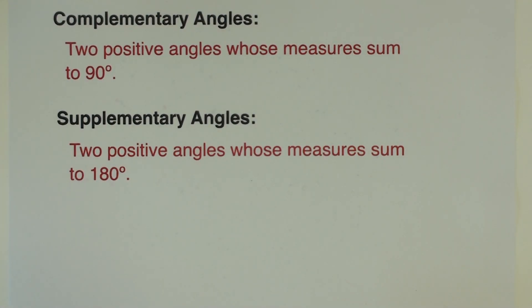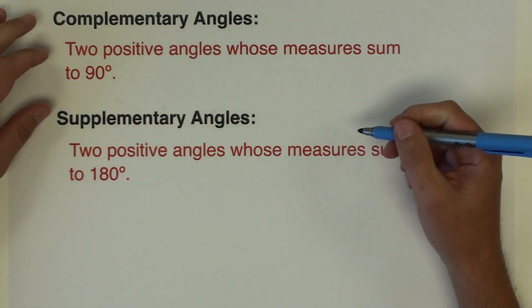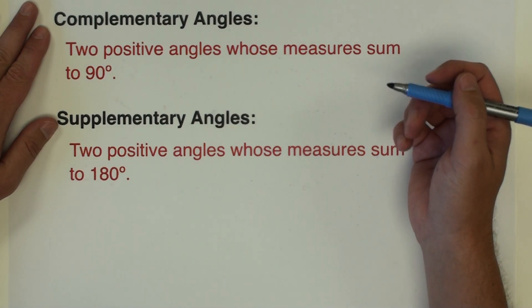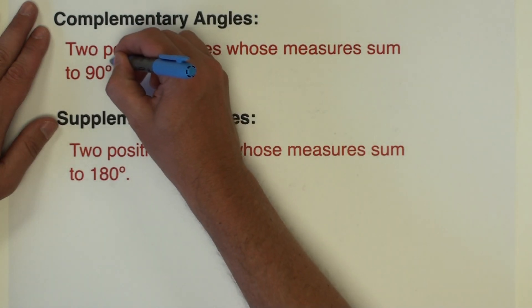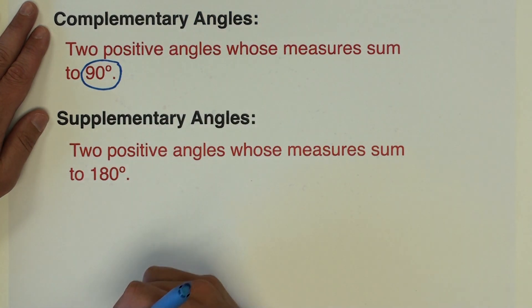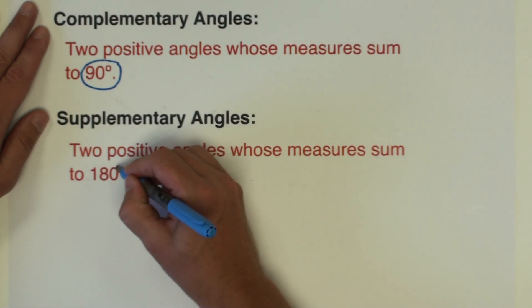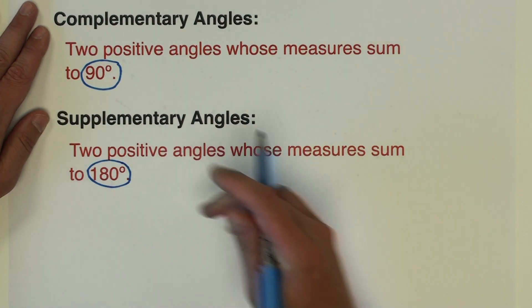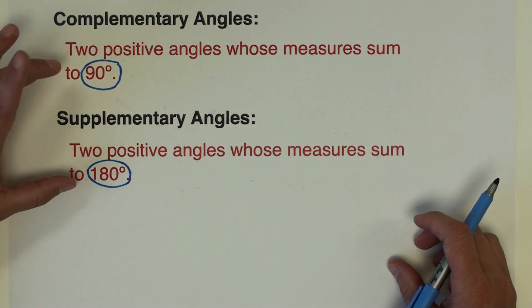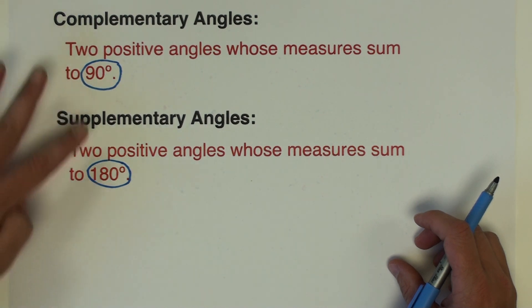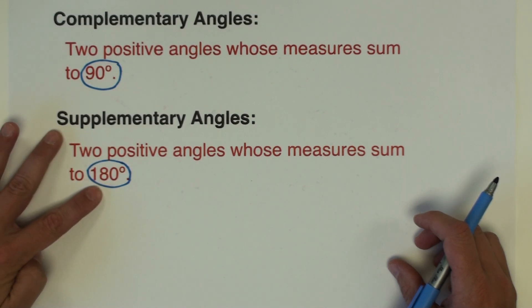We're going to start with the difference between complementary and supplementary angles. Complementary angles are two positive angles whose measures sum to 90 degrees, and supplementary angles on the other hand are two positive angles whose measures sum to 180 degrees. We really just have to memorize that complementary is 90 and supplementary is 180.